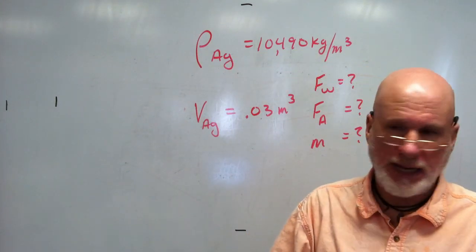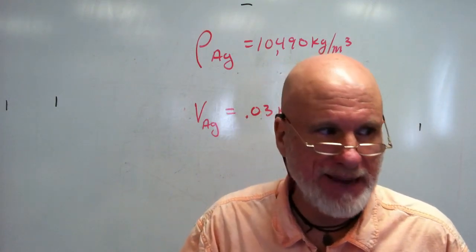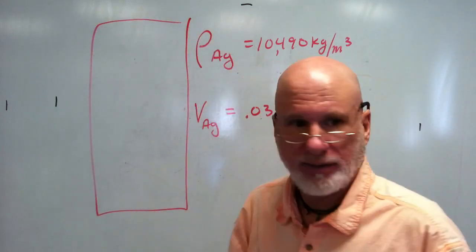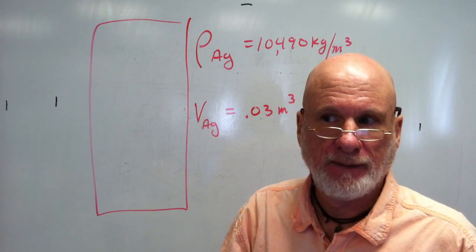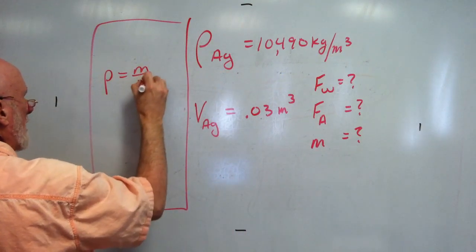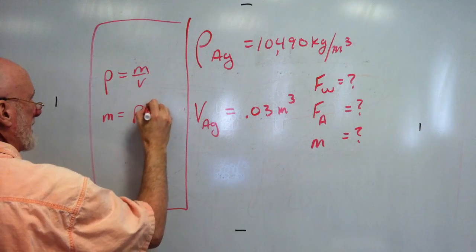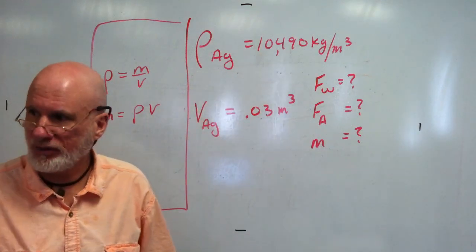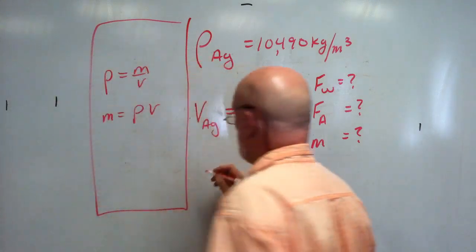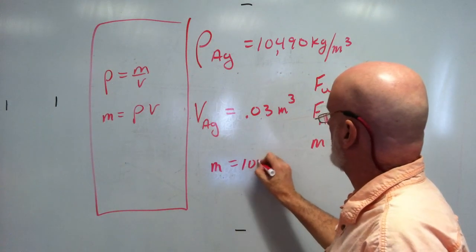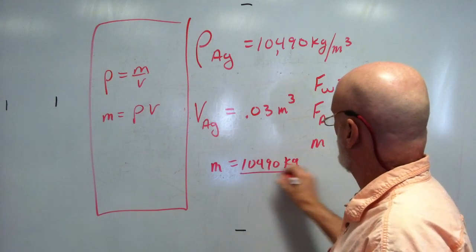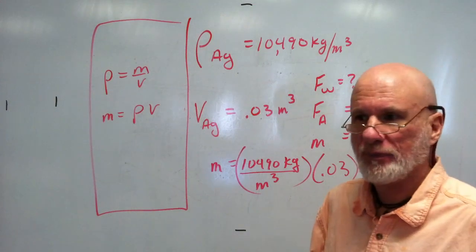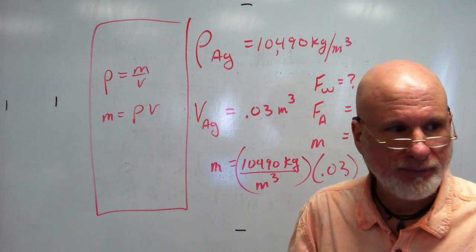What's the mass of the silver? We know that density equals mass over volume, so mass equals density times volume. That's 10,490 kilograms per cubic meter times 0.03 cubic meters — so the mass will be 314 kilograms.